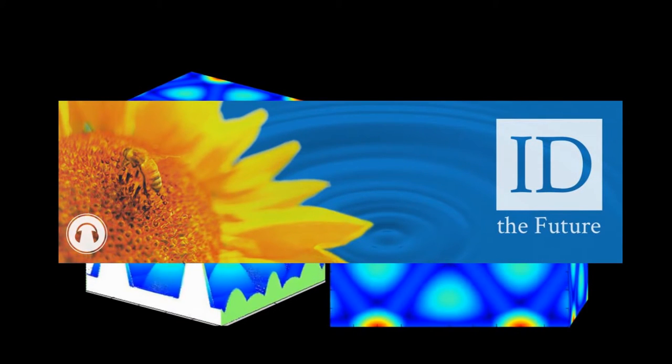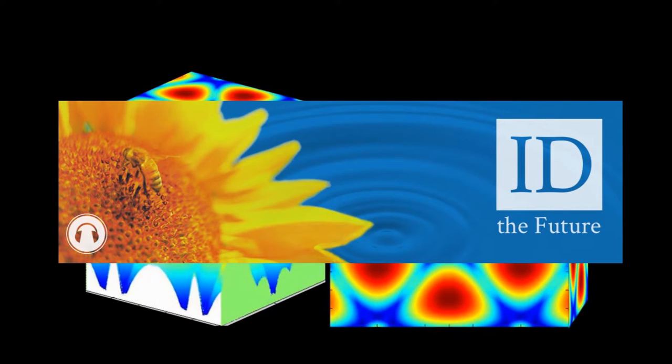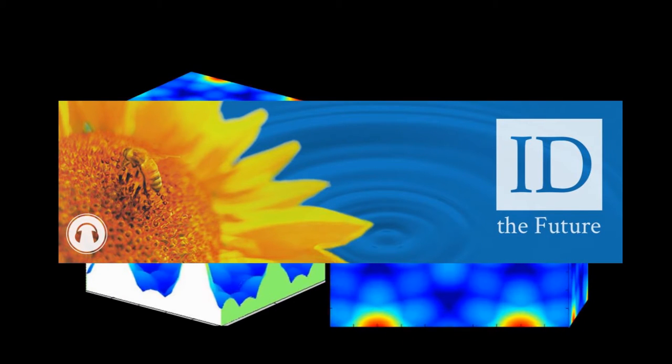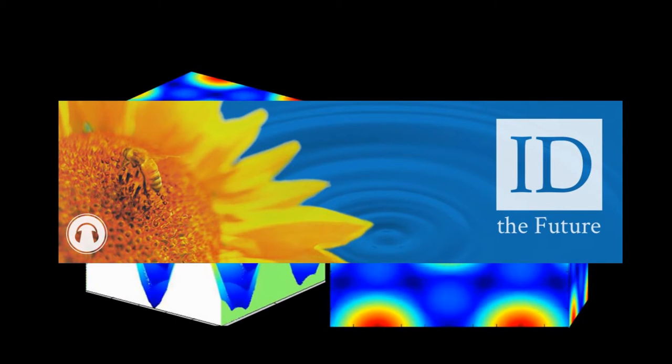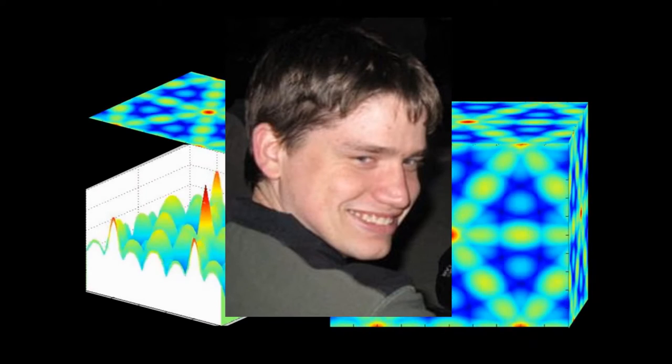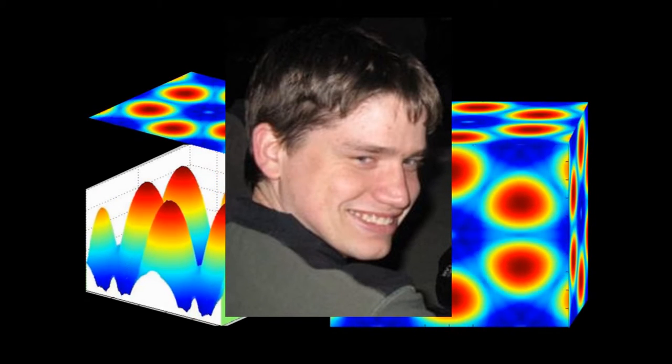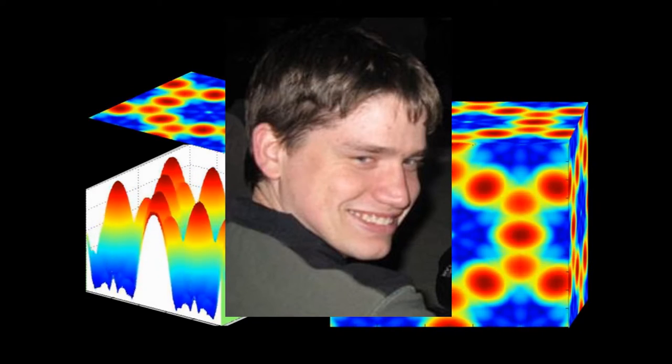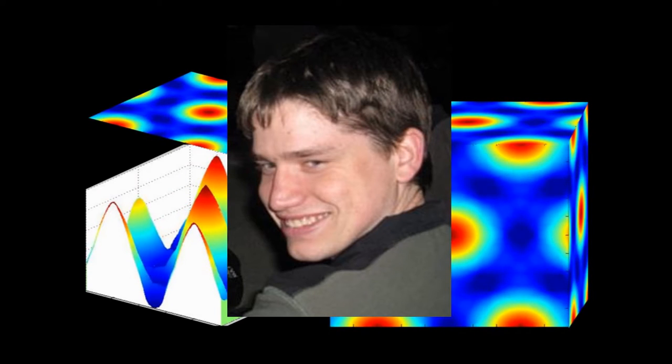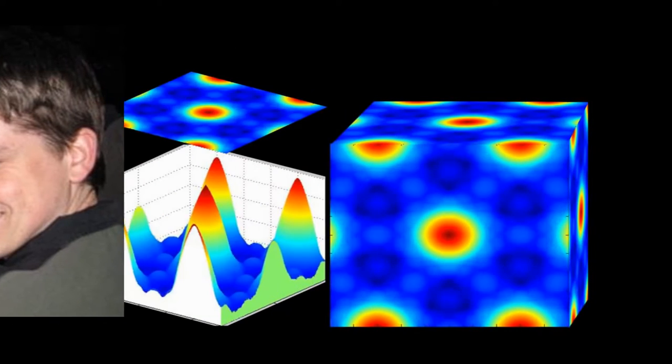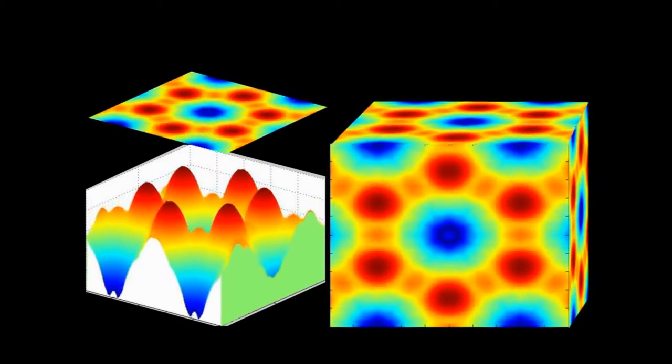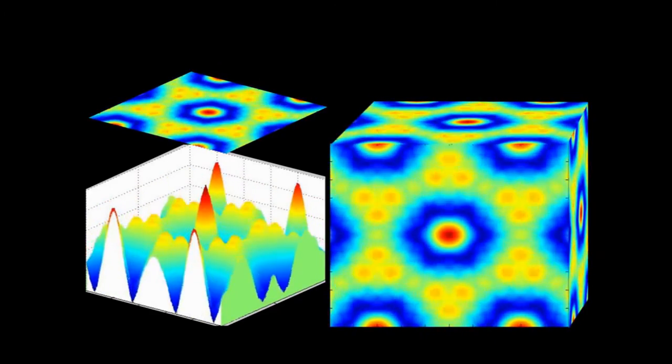Welcome to ID the Future. I'm Robert J. Marks, broadcasting with Discovery Institute's Center of Science and Culture in Seattle, Washington. This podcast is part three of an interview with Dr. Winston Ewart about his work at the Evolutionary Informatics Lab concerning algorithmic specified complexity.